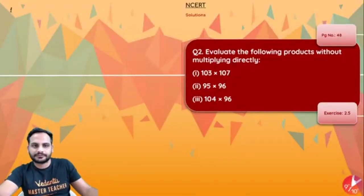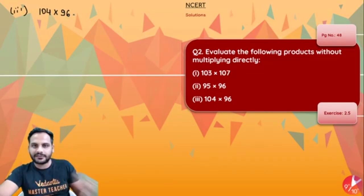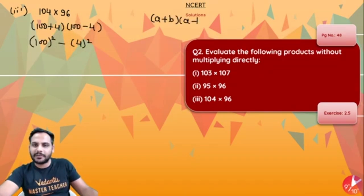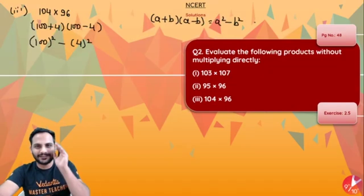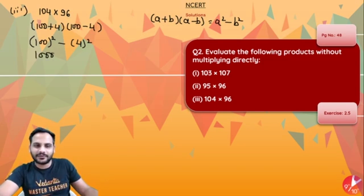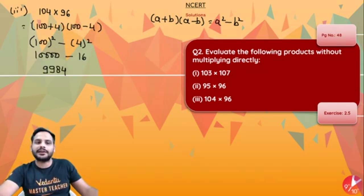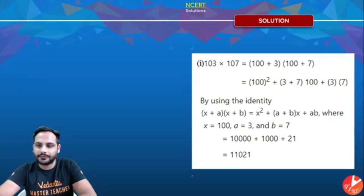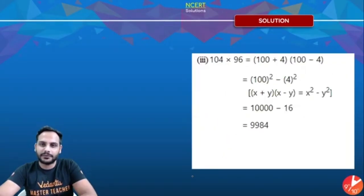The third part is 104 into 96. Here 104 is more than 100 and 96 is less than 100. I write 104 as 100 plus 4, and 96 as 100 minus 4. This becomes (100 + 4)(100 − 4), and the identity a² − b² = (a+b)(a−b) gives 100² − 4² = 10,000 − 16 = 9,984.